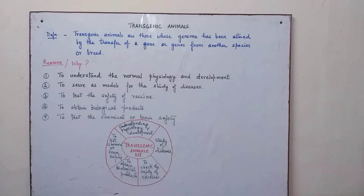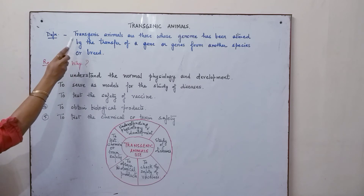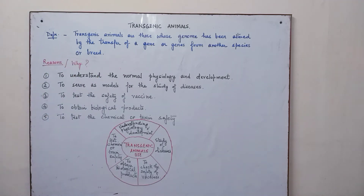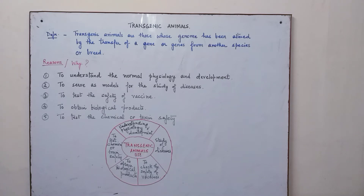In this video we are talking about transgenic animals, which are an integral part of biotechnology. Transgenic animals are those animals whose genome has been altered by the transfer of a gene or genes from another species or breed. Their original genome is changed either by the introduction of a gene from another species or another breed.